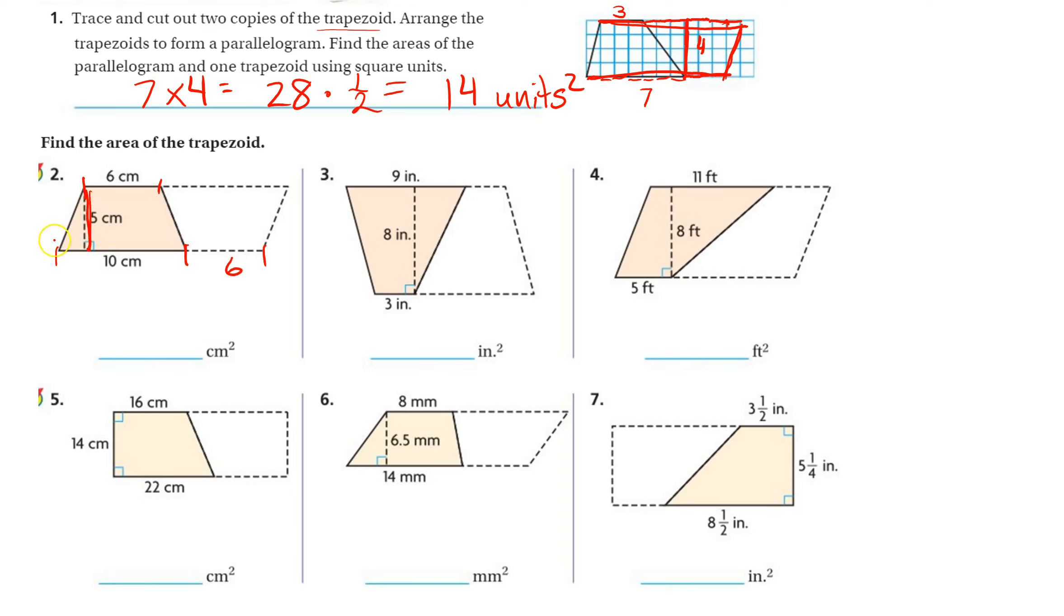So we have five times 16, because we have to have all of this. Five times 16, we can do that over here. 16 times five. Six times five is 30, five times one is five, plus three is 80.